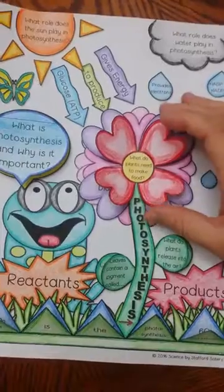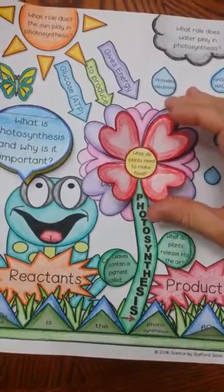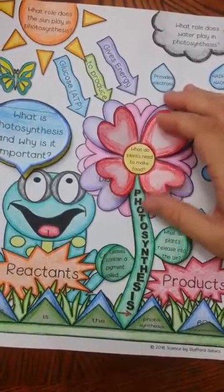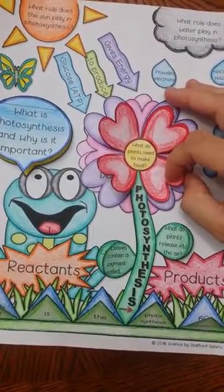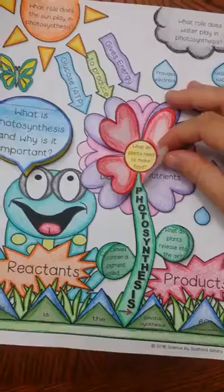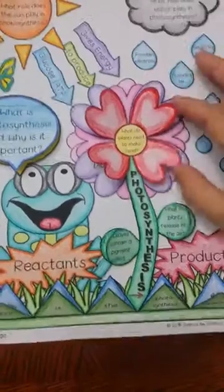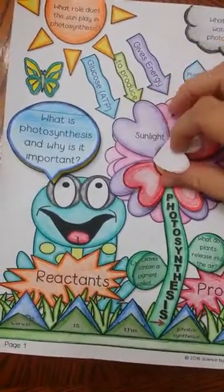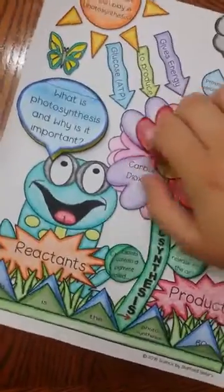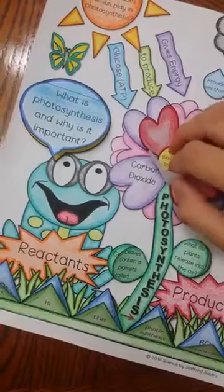Also, the rose petals fold up. It says: what do plants need to make food — nutrients, water, sunlight, and carbon dioxide.